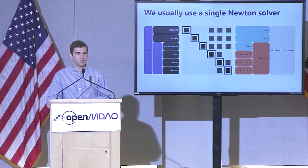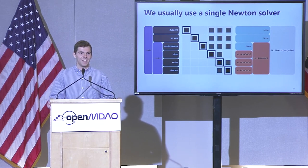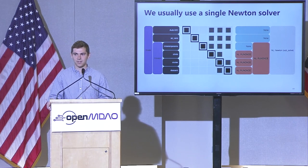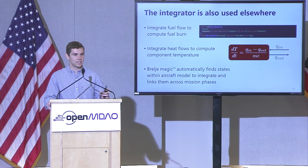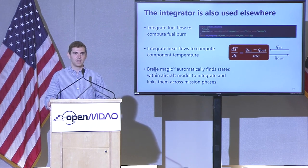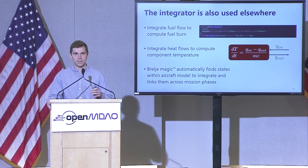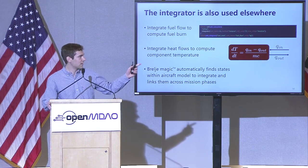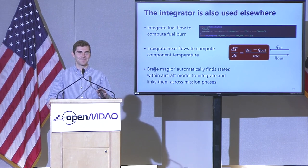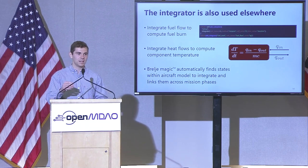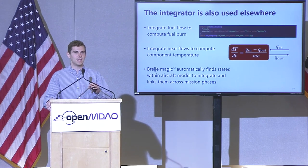In practice, we usually use a single Newton solver with solve_subsystems on — it tends to be robust enough for us. The integrator isn't just used for airspeed and vertical speed integration to altitude; it also shows up integrating fuel flow to get fuel burn, integrating heat flows with thermal mass to get temperatures, and there's a custom feature that automatically finds states within the model and figures out where they need to be integrated. Like Dymos, it also has a link-phases concept, and it's all abstracted so you can swap out integrators and implement whatever you want.